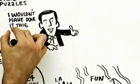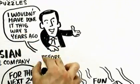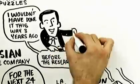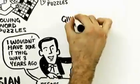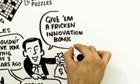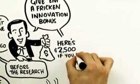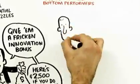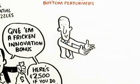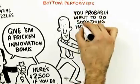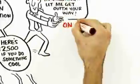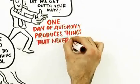Now, this is not an if-then incentive. This is not the sort of thing that I would have done three years ago before I knew this research. I would have said, you want people to be creative and innovative? Give them a freaking innovation bonus. If you can do something cool, I'll give you $2,500. They're not doing this at all. They're essentially saying, you probably want to do something interesting. Let me just get out of your way. One day of autonomy produces things that have never emerged.